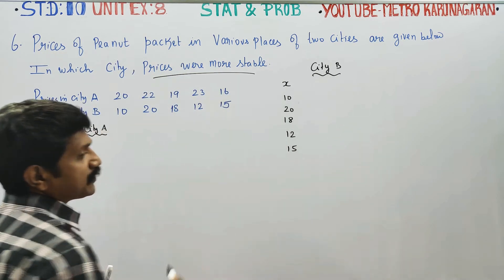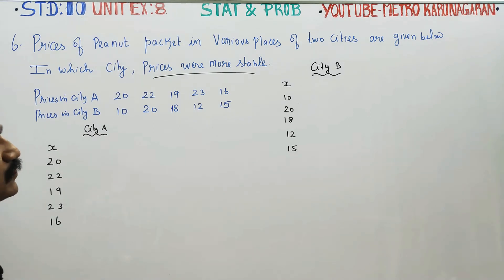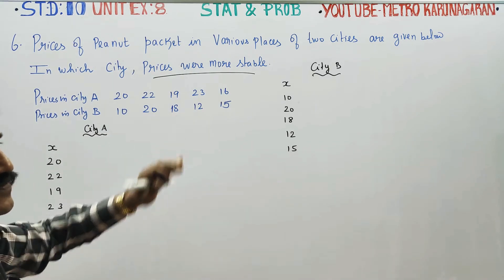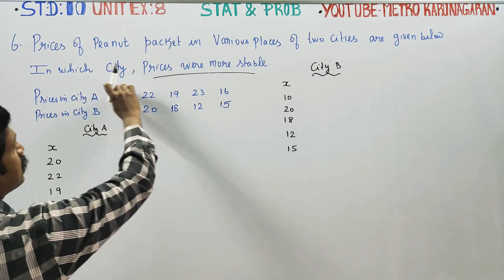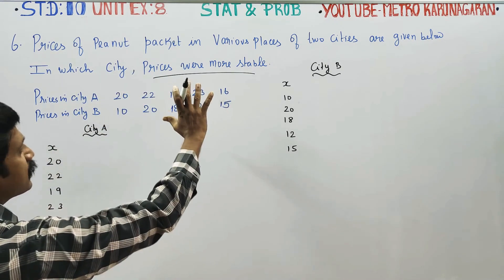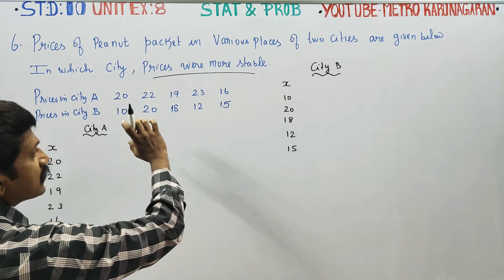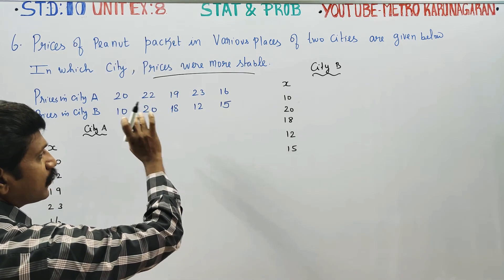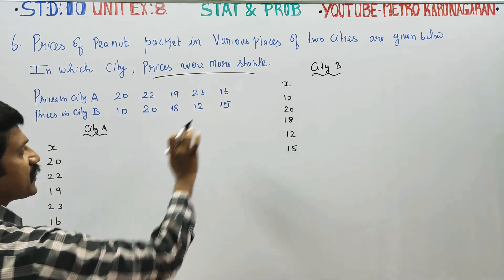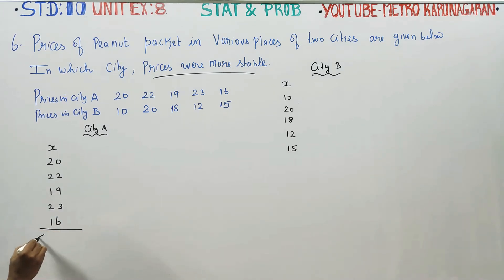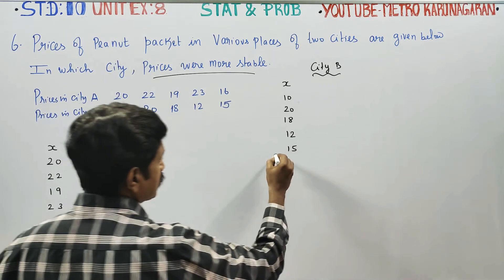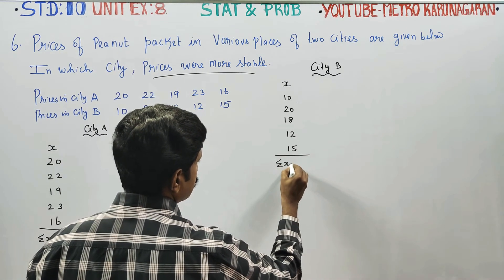We check which is more consistent along with the coefficient of variation. If there are the same units, the coefficient of variation tells us which is more stable — the one with the least coefficient of variation. We also need sigma X and the standard deviation sigma x.